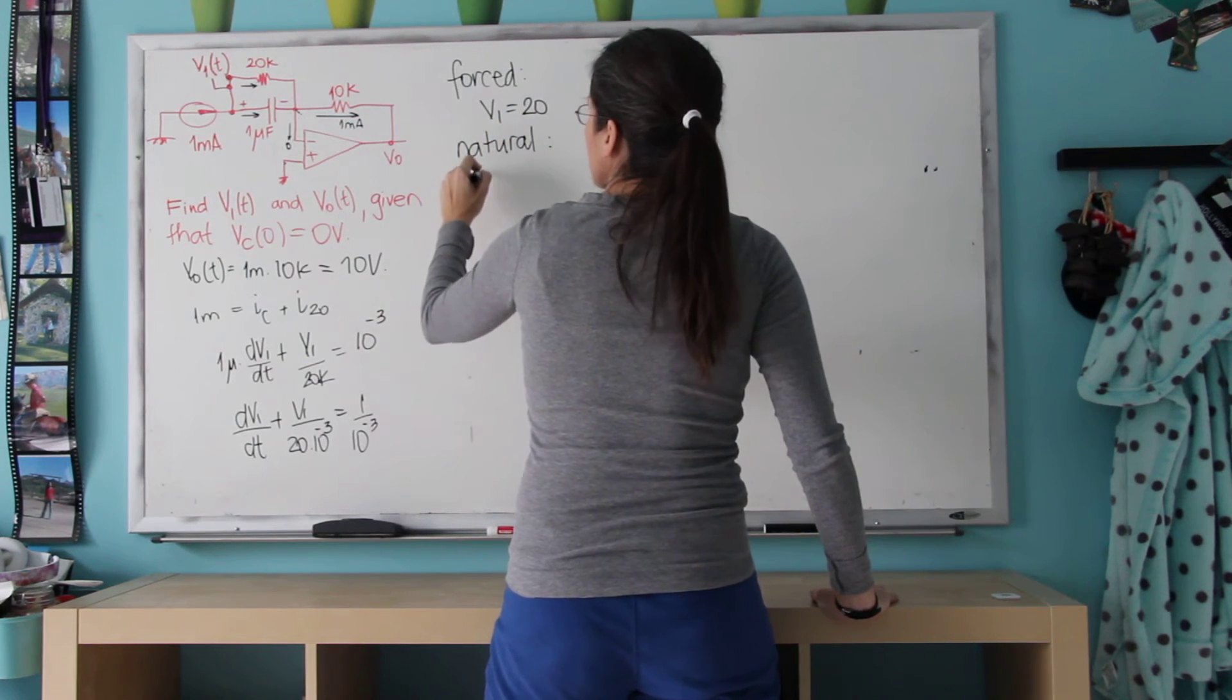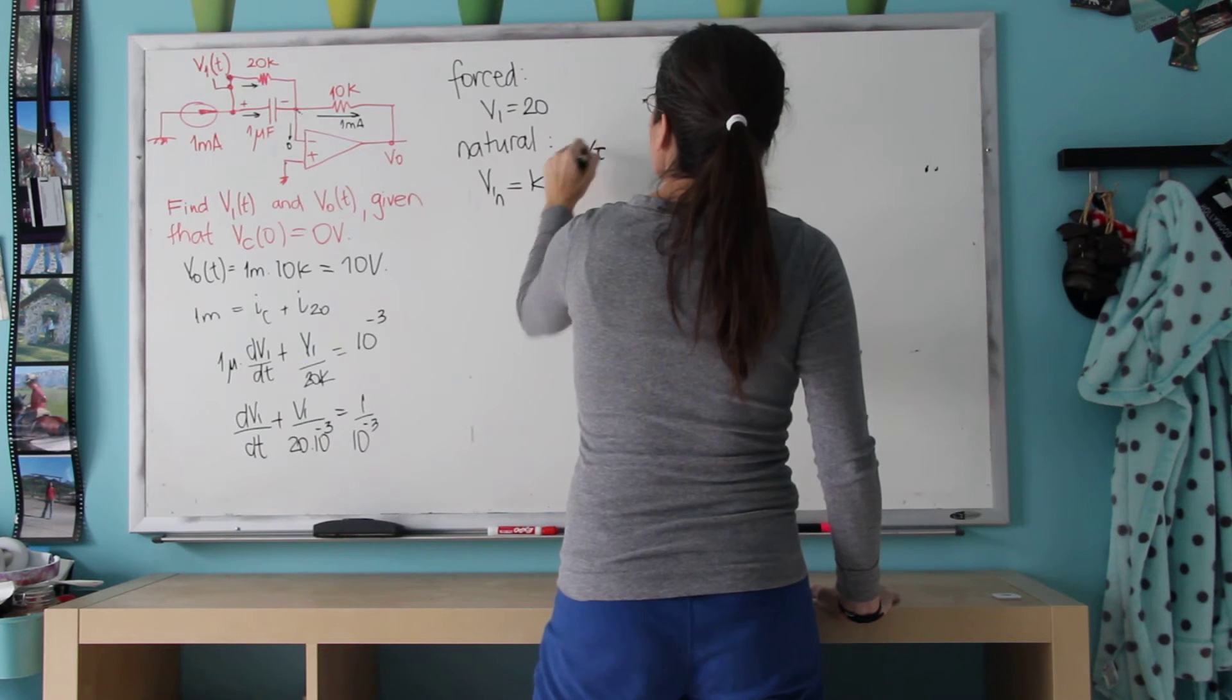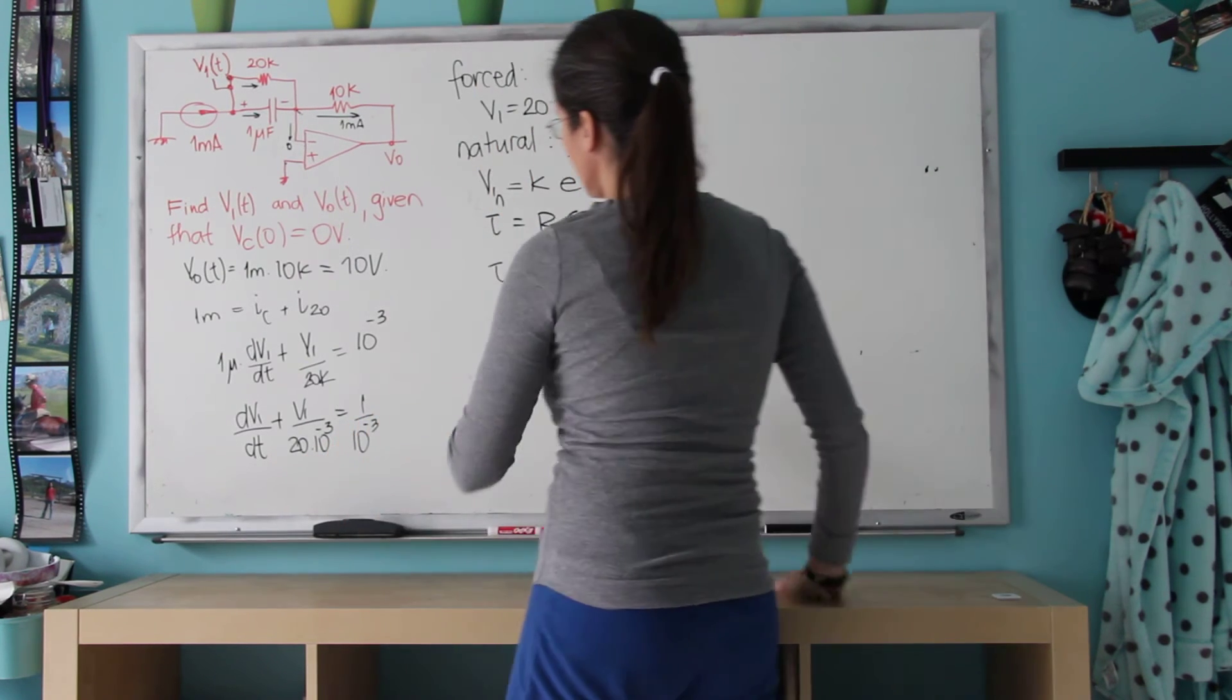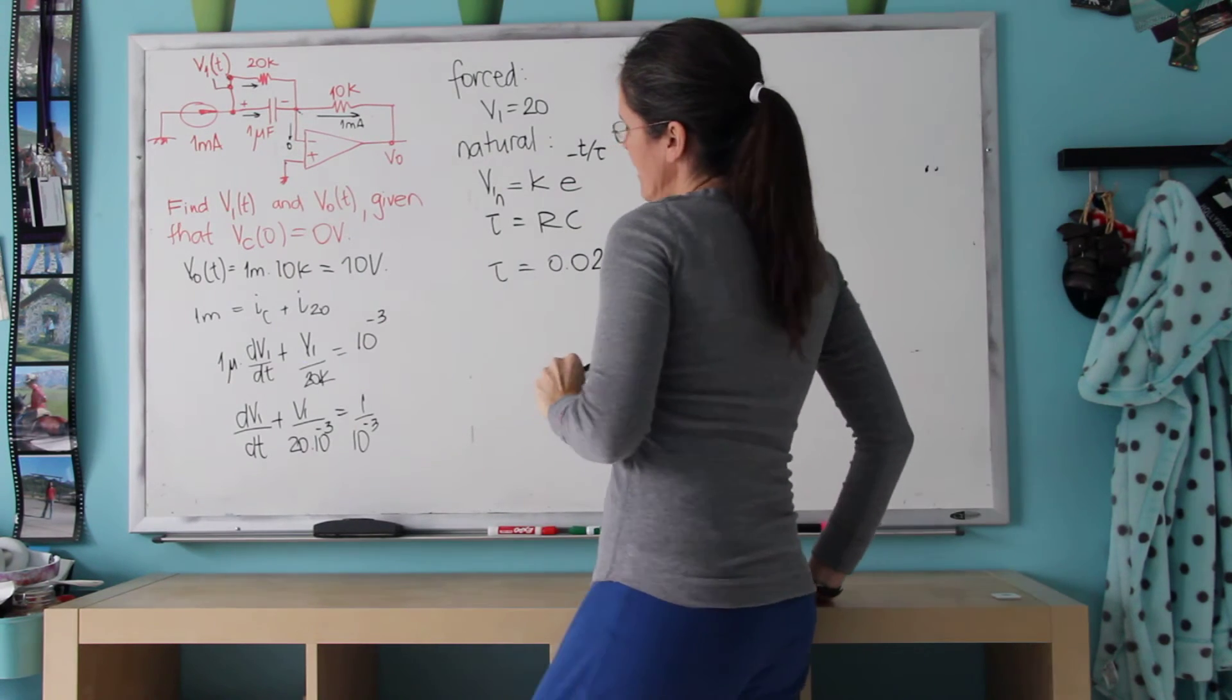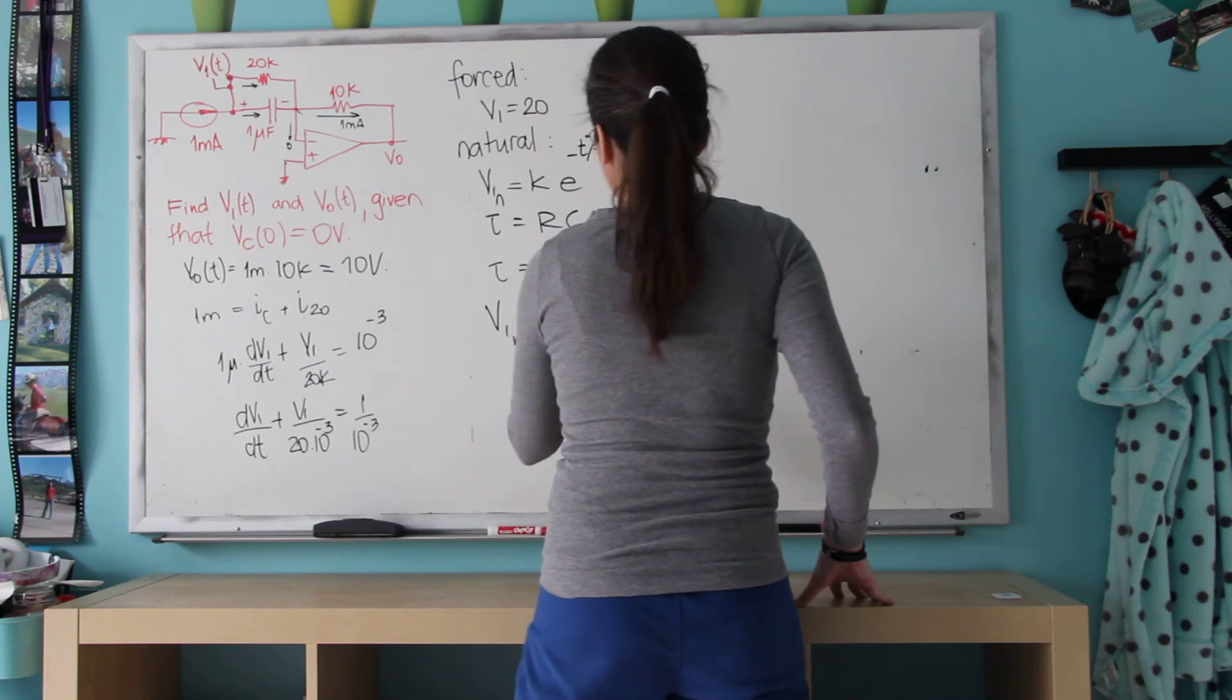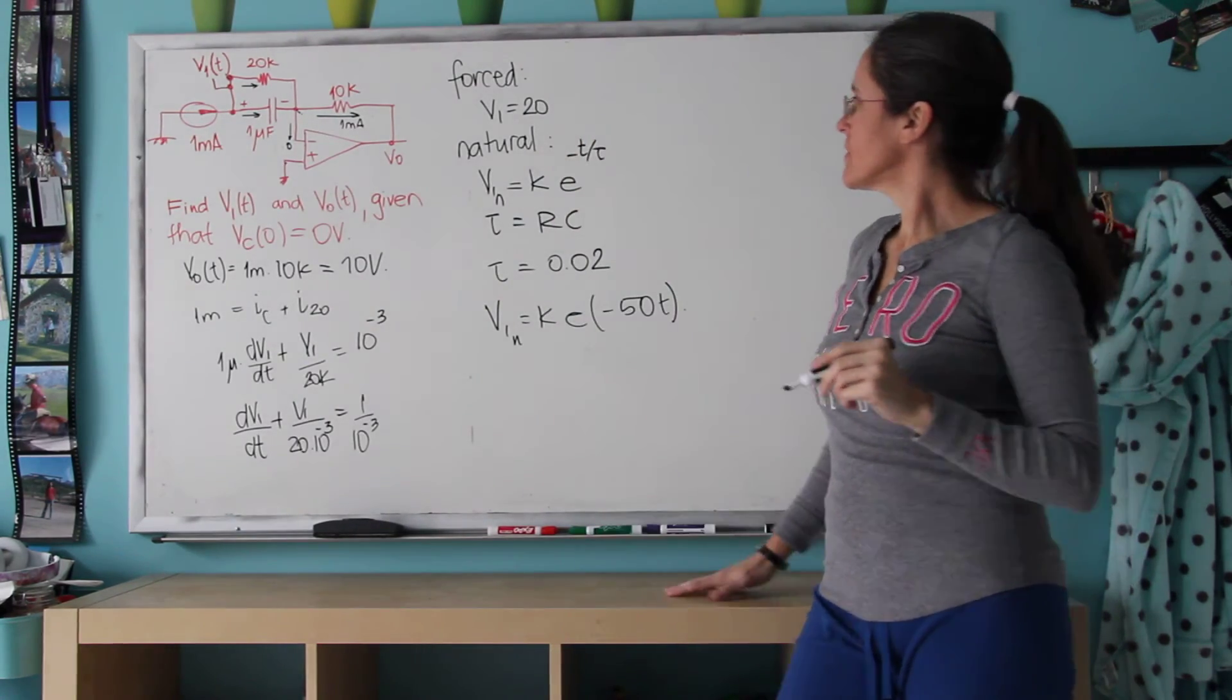And the natural response, V1 natural, is going to be K e to the minus T over tau, where tau is RC. And in this case, this is our RC. And then the total response is this plus this.